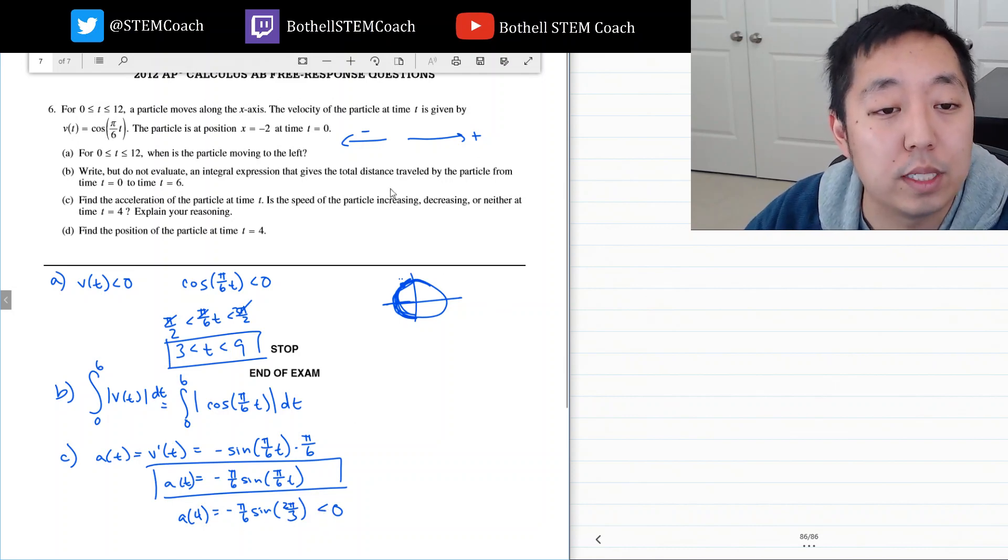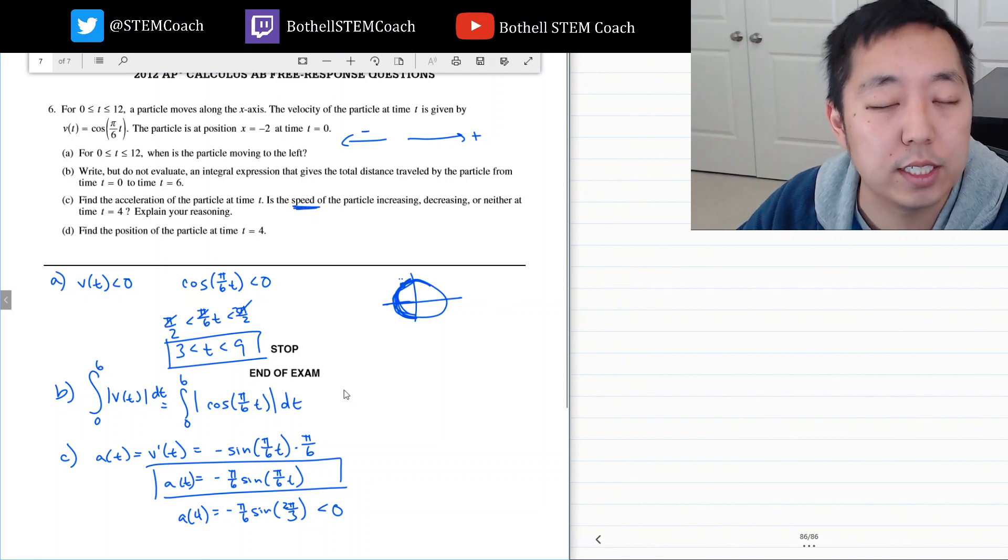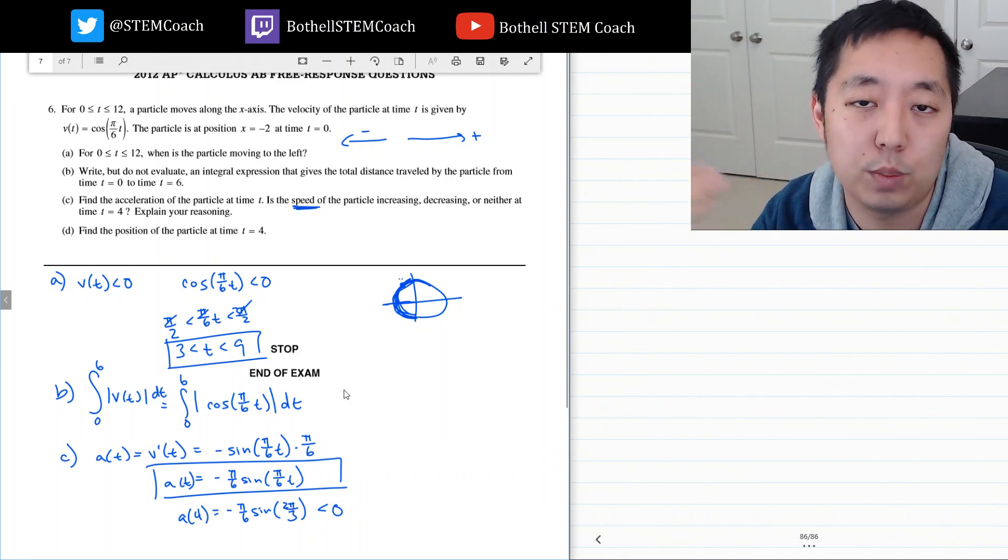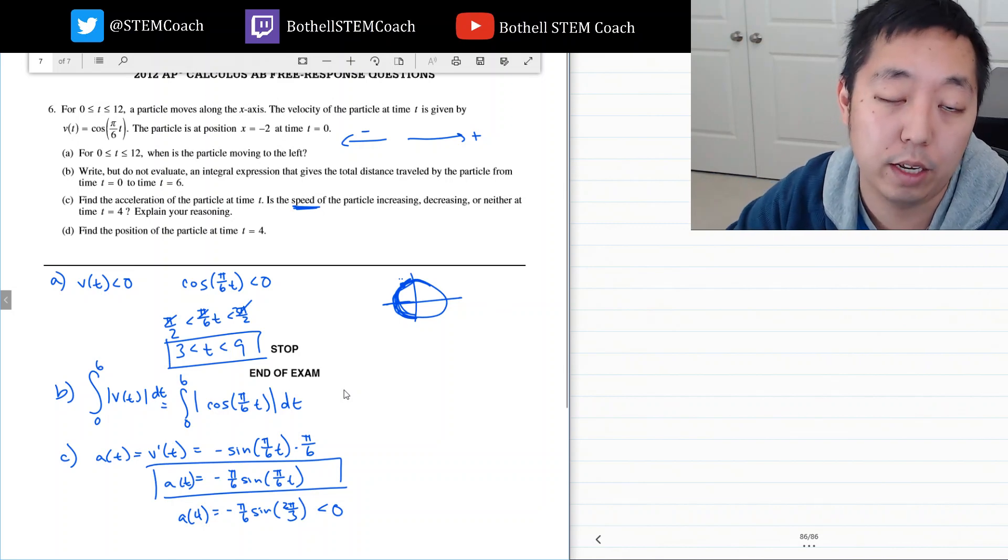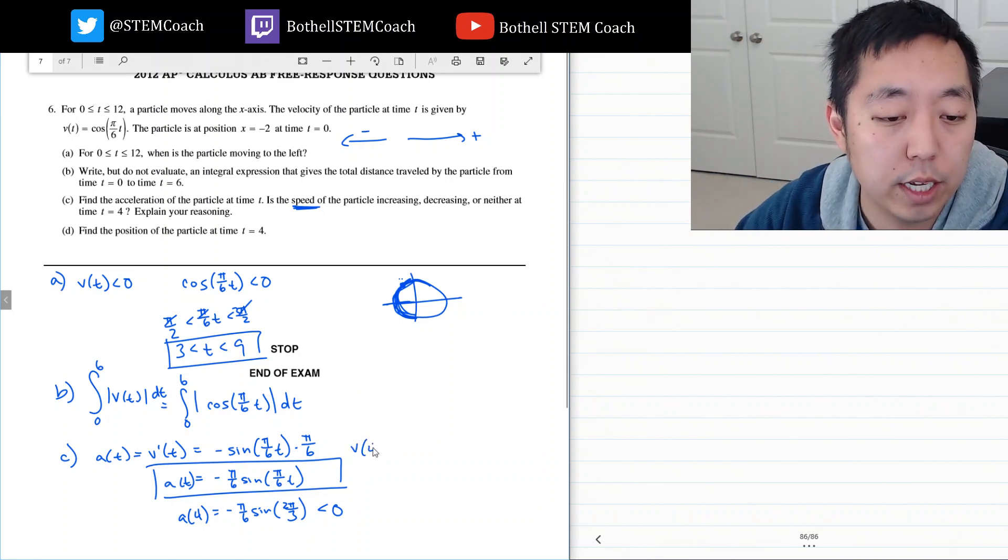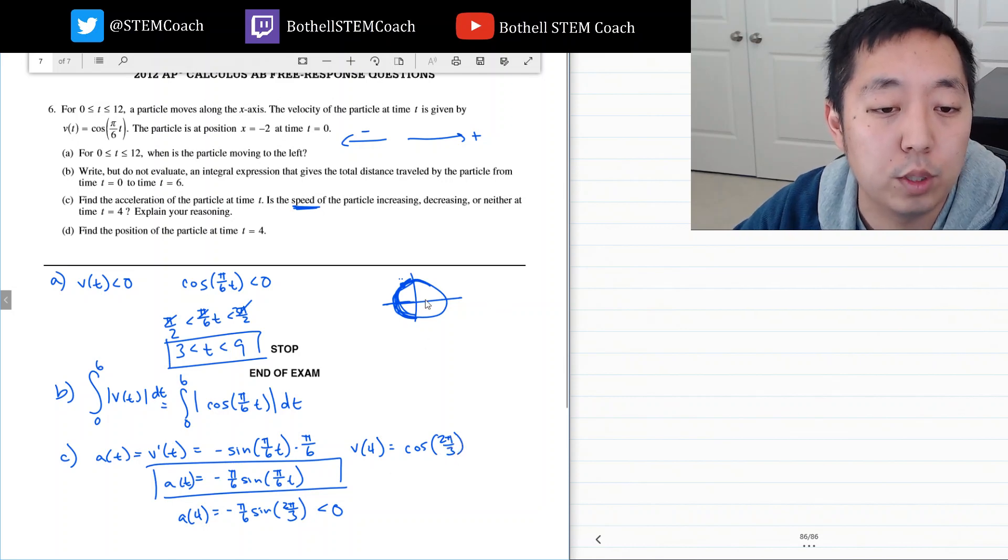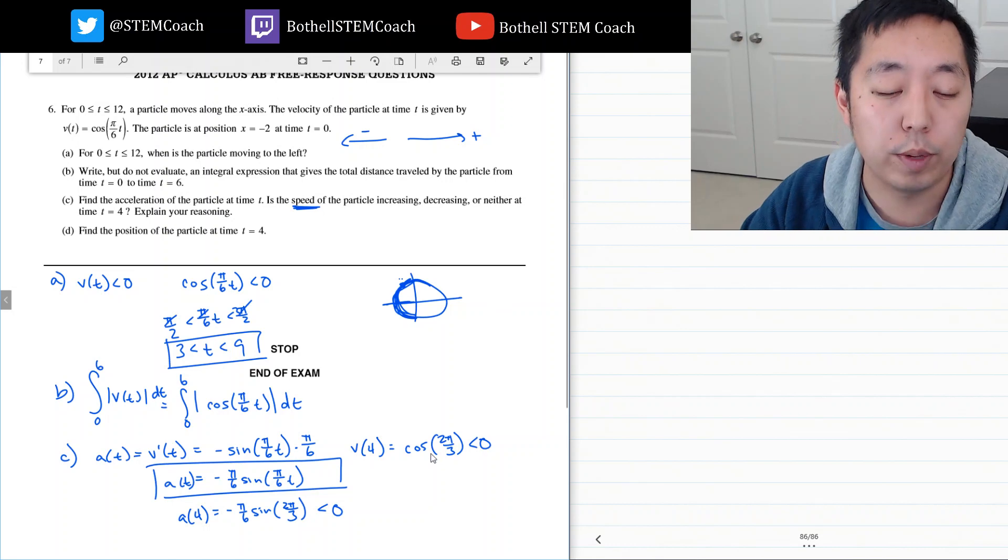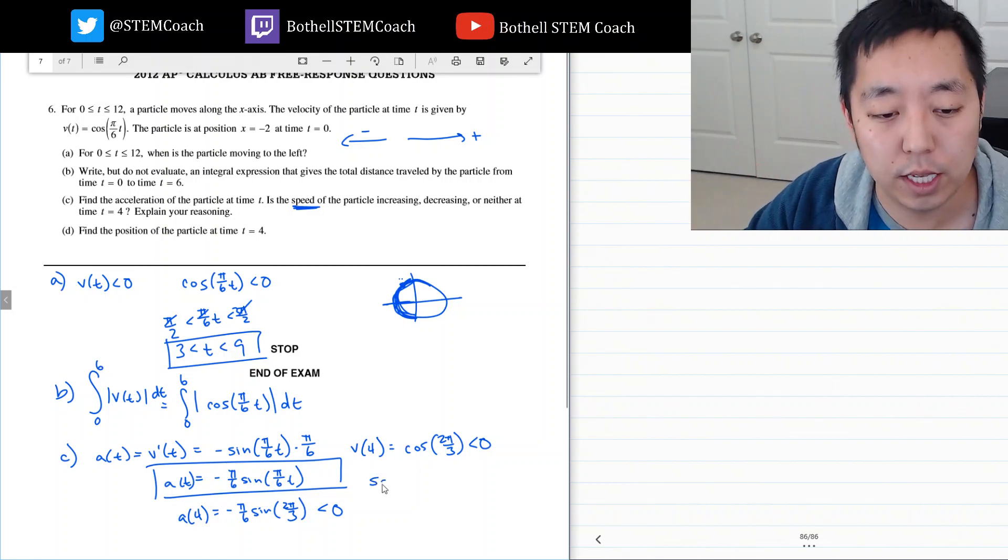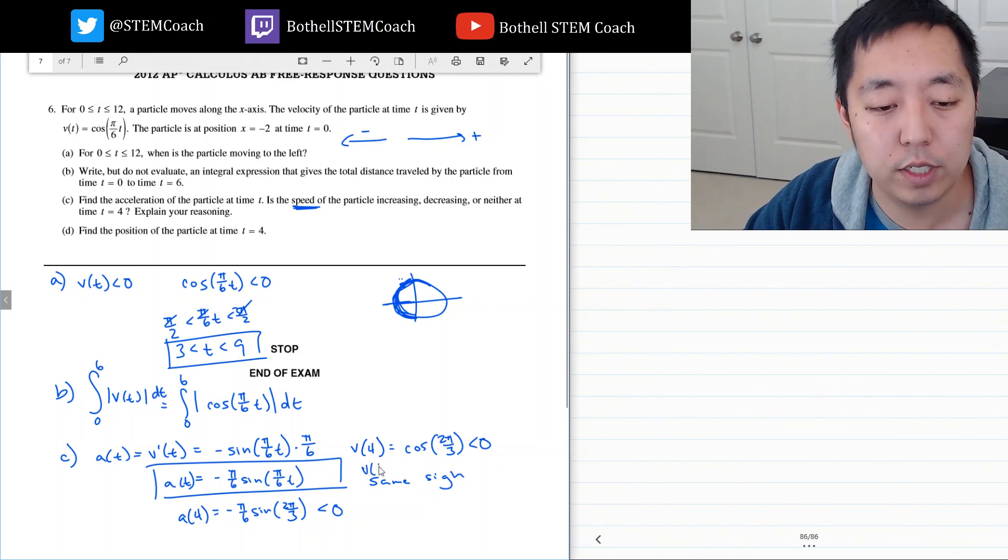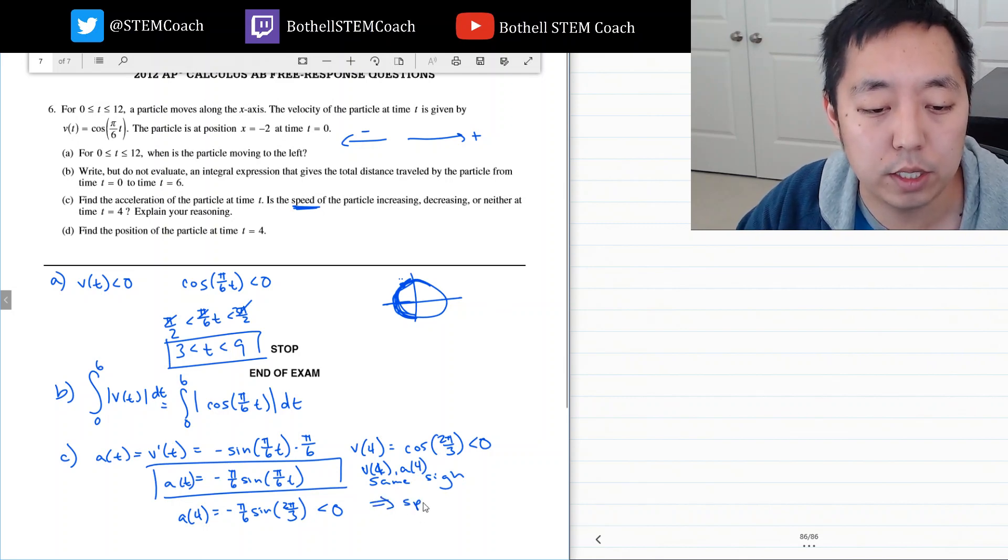But that's not enough to know whether the speed is increasing or decreasing because I got to know the direction that it's traveling. Negative acceleration means it's getting more negative but it could be positive and slowing down or negative and getting more negative, in which case it's speeding up. The velocity at time 4 is cosine of 2 pi over 3. Cosine of 2 pi over 3 is negative. So the velocity is already negative and the acceleration is negative. We say v of 4 and a of 4 are the same sign, which implies the speed is increasing.